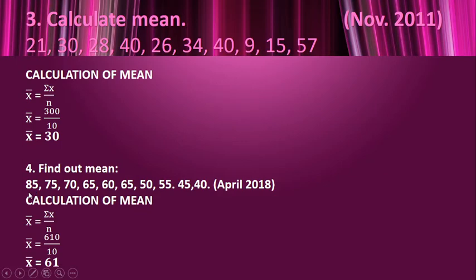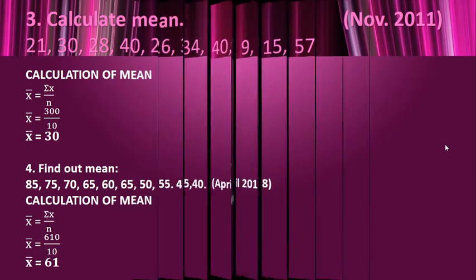In this question, the values are 85, 75, 70, 65, 60, 65, 50, 55, 45, 40. The total of those values, σx, is 610. The number of values is 10, so n is 10. Therefore 610 / 10 = 61, so x̄ is 61.